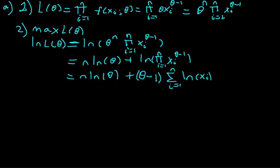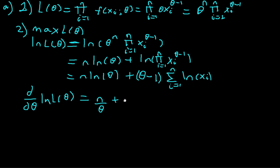Now we calculate the first derivative of the log-likelihood with respect to theta. This equals n divided by theta plus the sum from i equals 1 to n of the natural log of xi, since the constant minus 1 term differentiates to zero.